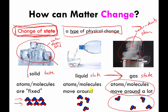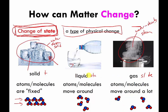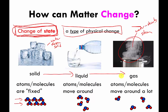Everything shown so far has been a change of state going in one direction — solid to liquid, liquid to gas — but you can go in the reverse direction too. You can take steam, cool it down, and it will condense into a liquid. You can take a liquid, cool it down, and it will freeze into a solid. Going backwards is also a change of state. You're just changing the physical state — the shape of the material — but not changing what it's made of.